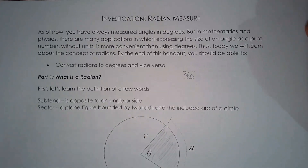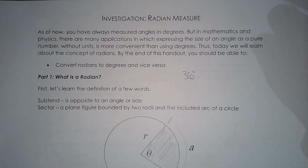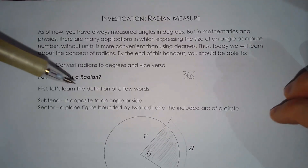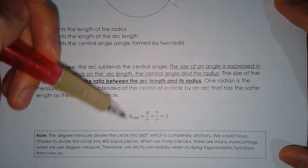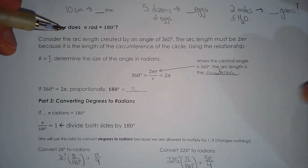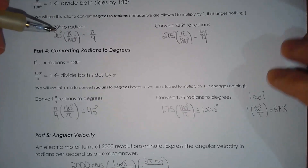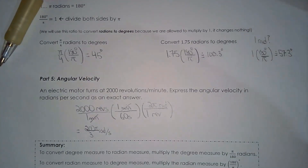To summarize: we introduced degree measure and why it's advantageous, but noted its big pitfall — there's no mathematical basis for degrees. Radians, by contrast, have a clear mathematical definition: the ratio between arc length and the radius of the circle. Once we defined a radian, we learned the conversion factor to go between radians and degrees, worked through examples, and discussed angular velocity. Homework follows in the next video.